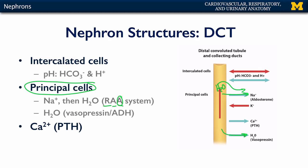The primary site of reabsorption for water is the proximal convoluted tubule, but the nephron loop and the distal convoluted tubule are also very helpful for refining that. Finally, here in the distal convoluted tubule, we have the ability to retain calcium. Parathyroid hormone, secreted by the parathyroid gland, causes the distal convoluted tubule to reabsorb any calcium found in the filtrate and push it into the cardiovascular system, maintaining the body's supply of blood calcium.